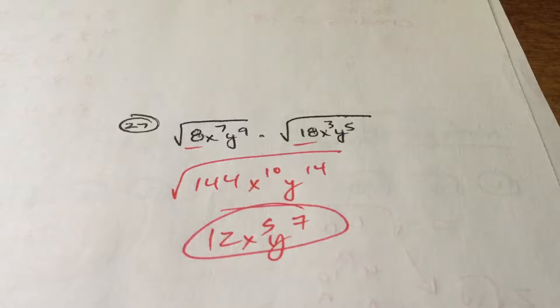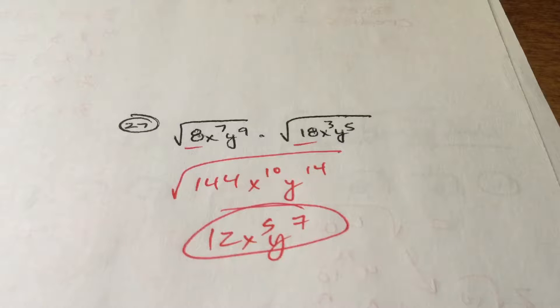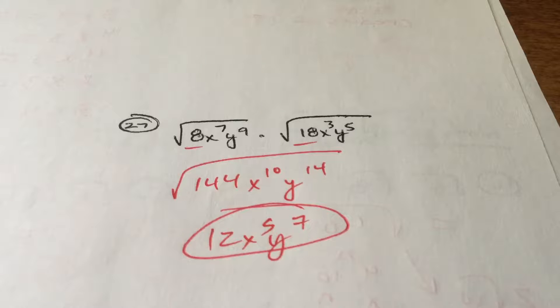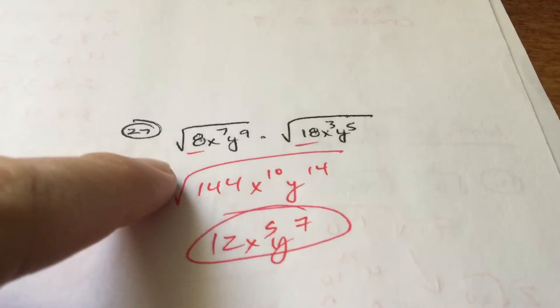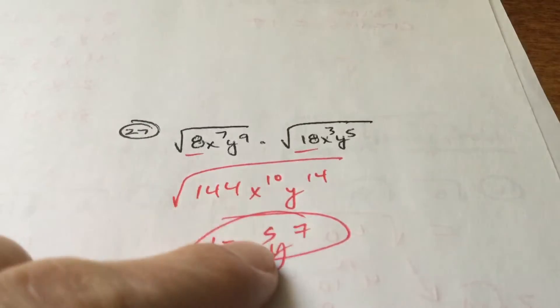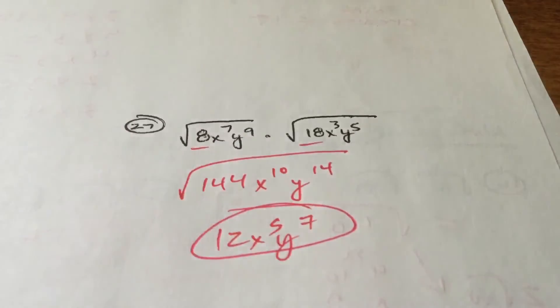Here is number 27: everything breaks out nicely. 8 times 18 is 144; the square root of that is 12. Multiply the x's and the y's, and again there's an imaginary 2, which goes into 10 five times; 2 goes into 14 seven times.